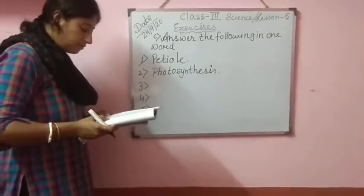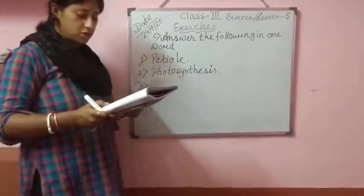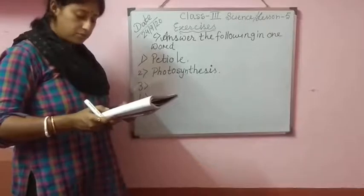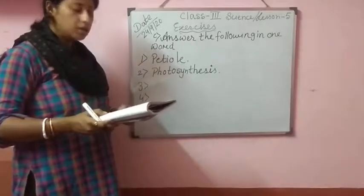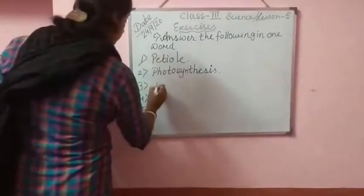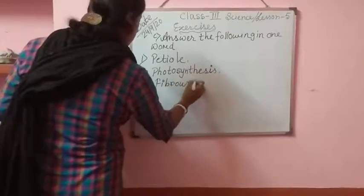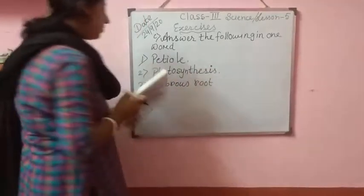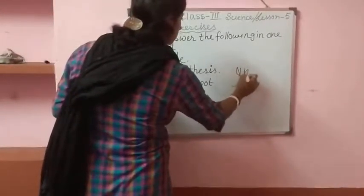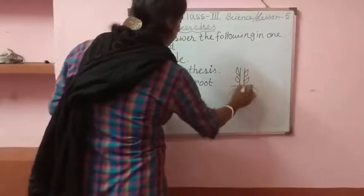Number 3: type of root that comprises a number of roots that grow from the lower edge of the stem. Number 3 answer will be fibrous root.